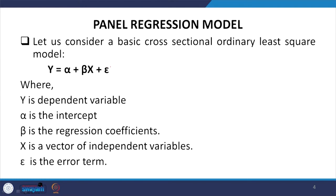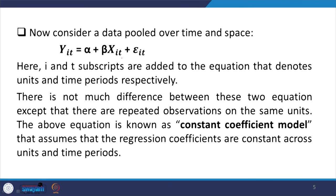Let us start with a simple ordinary least square model: Y = α + βX + ε, where Y is the dependent variable, α is the intercept, β is the regression coefficient, X is the vector of independent variables, and ε is the error term. We are trying to pool this data over time and space to make it panel format, using two subscripts i and t. The panel model is written as Y_it = α + βX_it + ε_it, where i and t denote units and time period respectively.